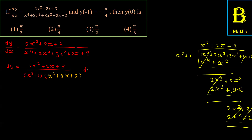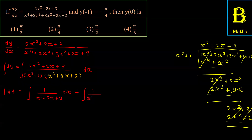dx को सामने की side लिया था, तो अब दोनों sides integration लेते हैं। Integration of dy = integration of (2x² + 2x + 3) / [(x² + 2x + 2)(x² + 1)] dx। इसको दो parts में divide कर सकते हैं: ∫ 1/(x² + 2x + 2) dx + ∫ 1/(x² + 1) dx।